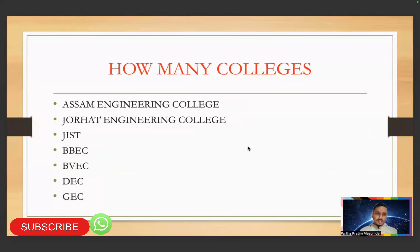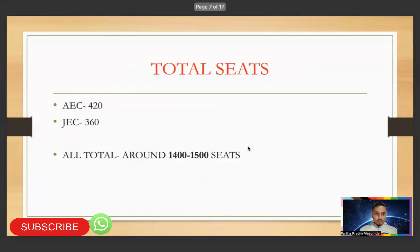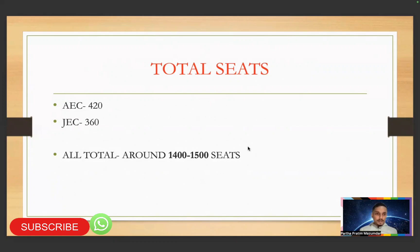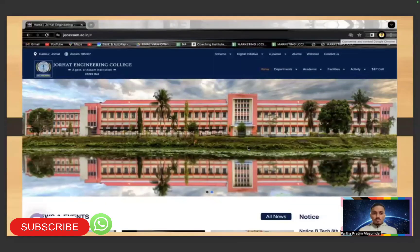How many colleges? As you may know: Assam Engineering College, Jorhat Engineering College, GIIST, BBC, BVEC, DEC, GEC and more. I've covered full forms in my other videos — check the playlist. Total seats are around 1400 to 1580 across all colleges. For exact seat details per college, you can check each college's own website — every college has its own website where you'll get all information: departments, seats, placements, everything.